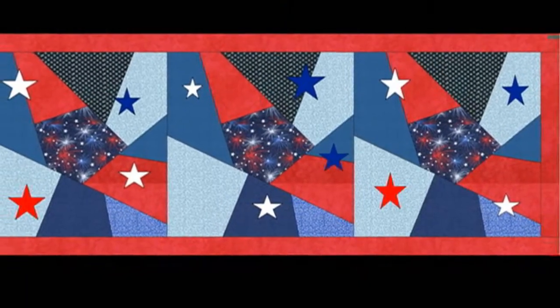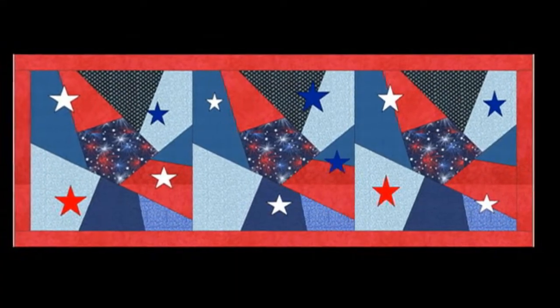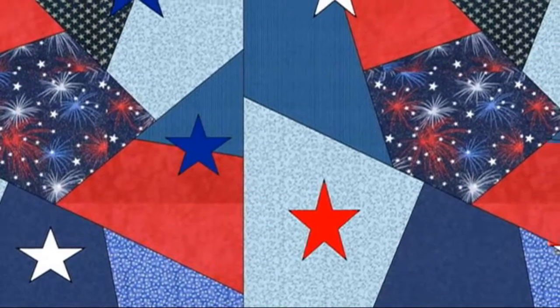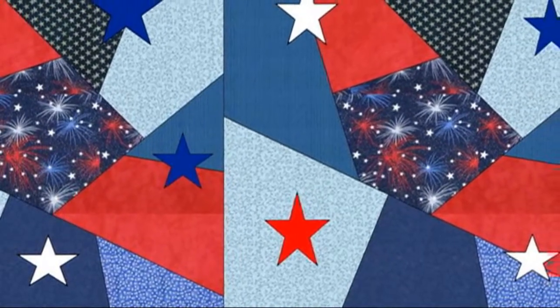This is a picture of a table runner and it has some stars appliqued on different pieces of the pattern. I have used three appliqued stars. It makes a nice table runner. You could do three or you could do four depending on the length of the table. You could even do five.